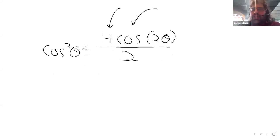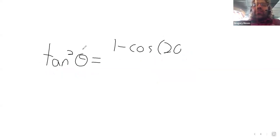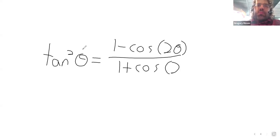And then we have a reduction formula for the tangent, which you've probably noticed that the tangent identities tend to be more complicated than the sine and the cosine identities. That's true here as well.